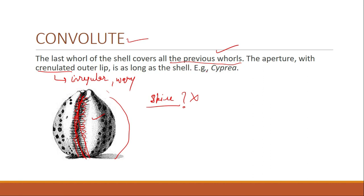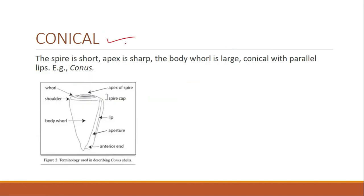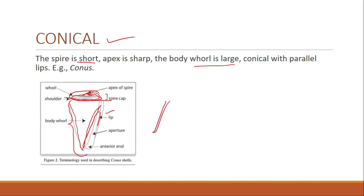The next shell form is conical. In conical shell form the spire is short with a sharp apex, the body whorl is large, and the shape is conical with parallel lips — the lips are parallel to each other. So in conical: short spire, sharp apex, large body whorl, conical shape with parallel lips. The example is Conus. With this we have completed the important shell forms of gastropods.